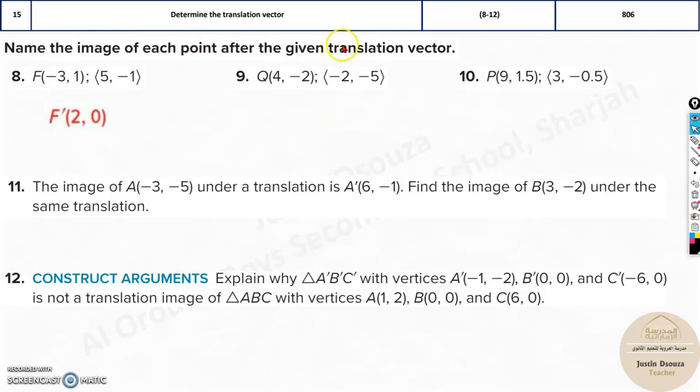Same thing over here. Subtract 2 from 4. First with first. x with x, y with y. So 4 minus 2 is 2 and minus 2 minus 5 is minus 7. 2 minus 7. Same way over here. You can do it by yourself. All these are very simple.